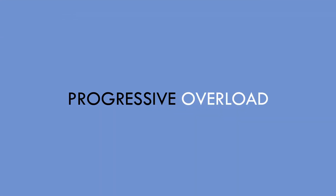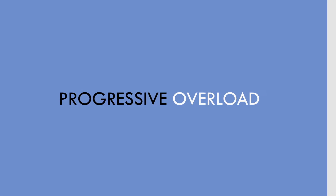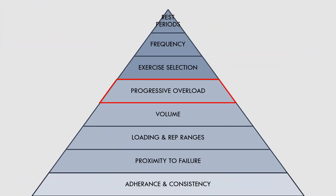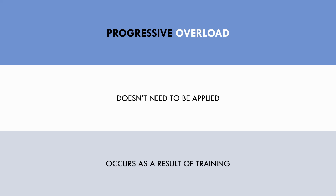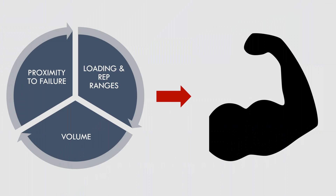The next factor in the hypertrophy hierarchy is progressive overload. Progressive overload refers to making training harder over time. For hypertrophy training, this means performing more weight or more reps in the 6-20 rep range over time. Progressive overload is a very grey subject for hypertrophy training. We don't necessarily need to apply progressive overload in a program, but we need to ensure training is stimulative enough for progressive overload to occur. So progressive overload can be seen more so as a result of training rather than the driver of hypertrophy. This means that if training is taken close enough to failure, we are working in the appropriate rep range, and we are performing the right amount of volume, then we should naturally see improvements in performance over time.